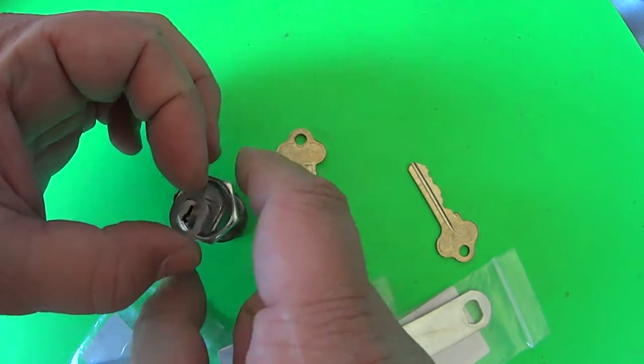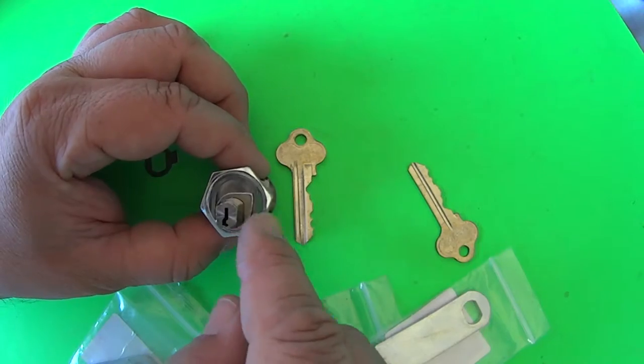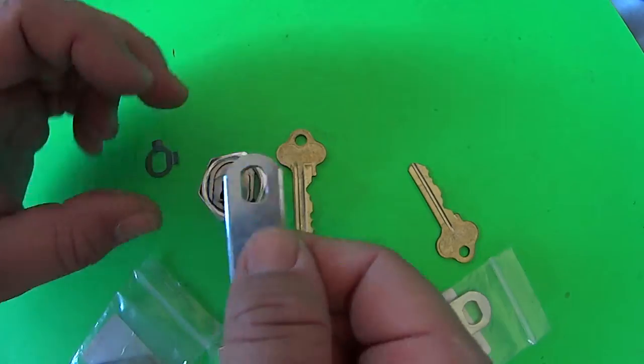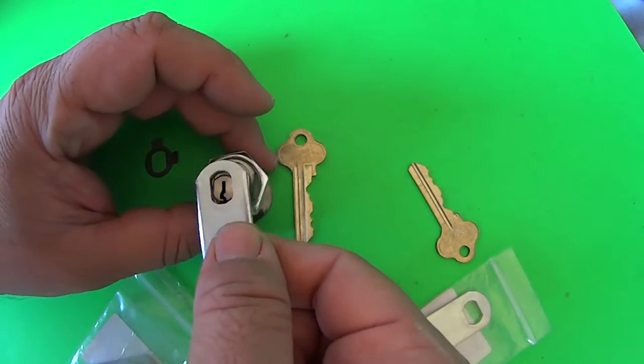So on the back here, this little egg-shaped thing here, that's a restrictor, so you can reverse that, put it in whichever direction you want, but it is generally a 90 degree open turn.